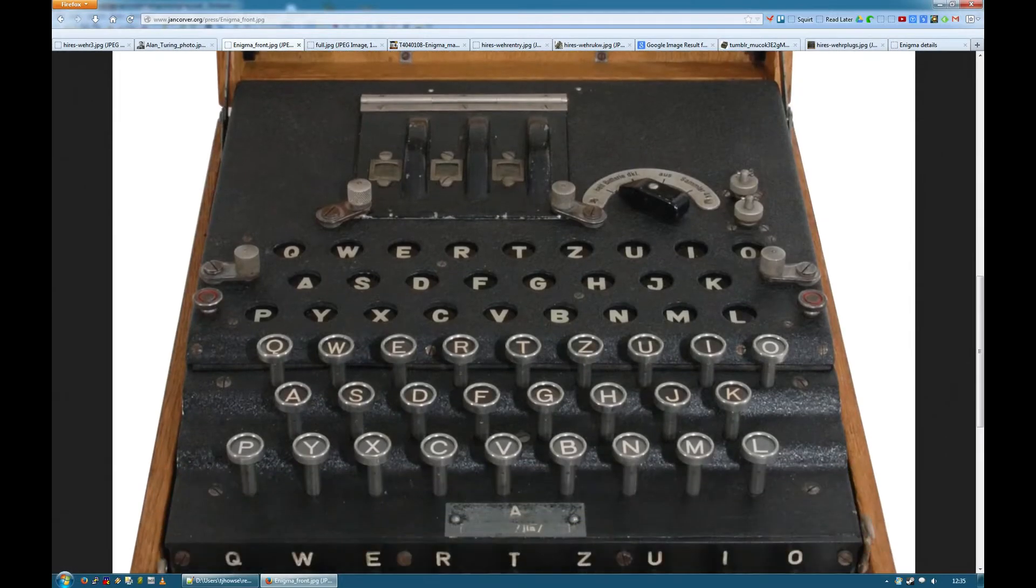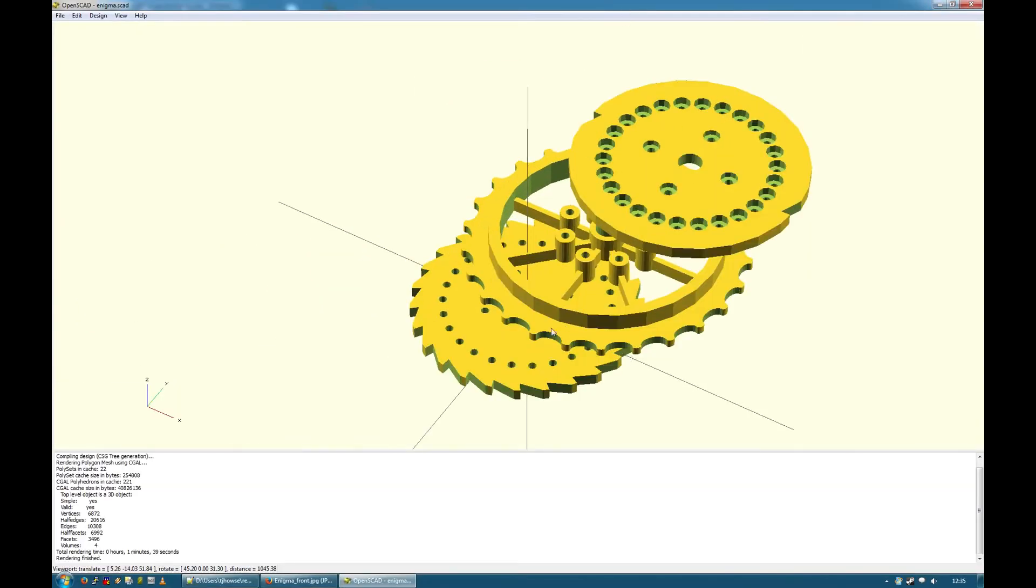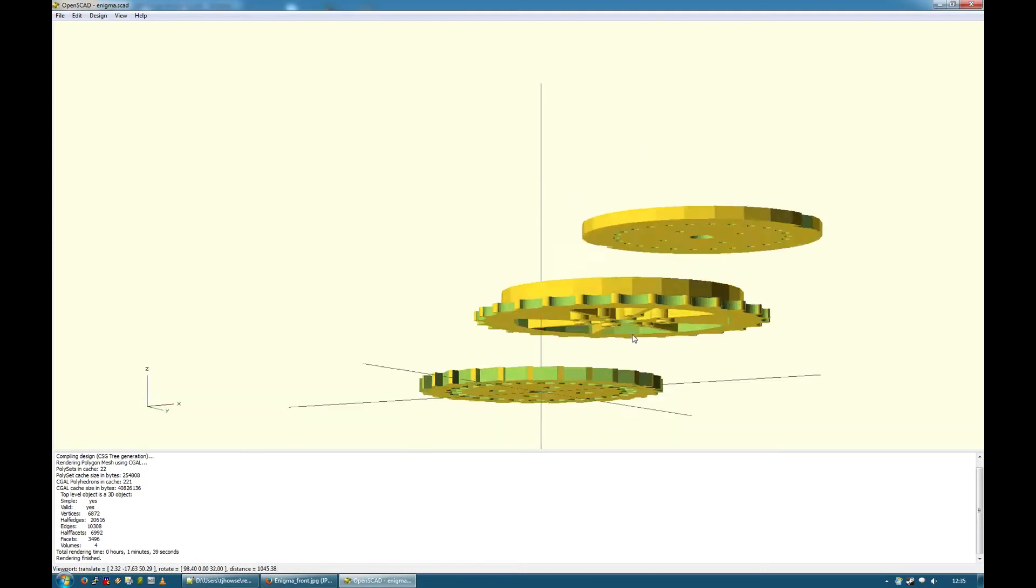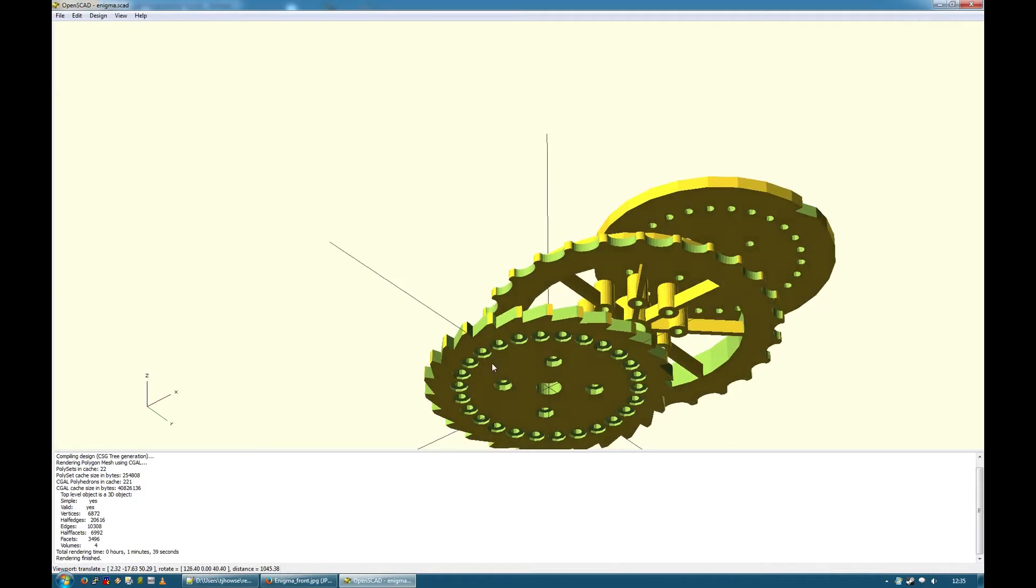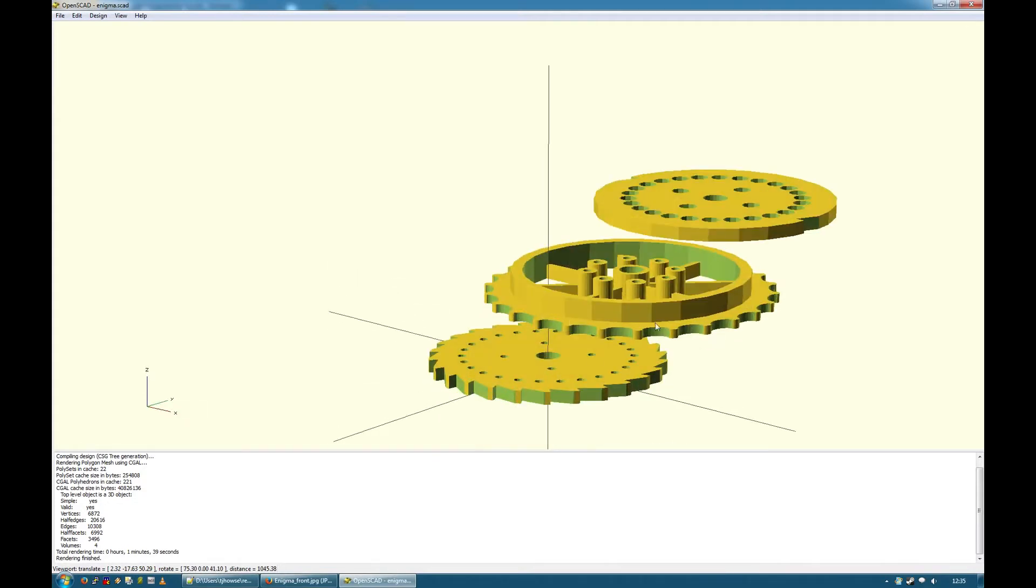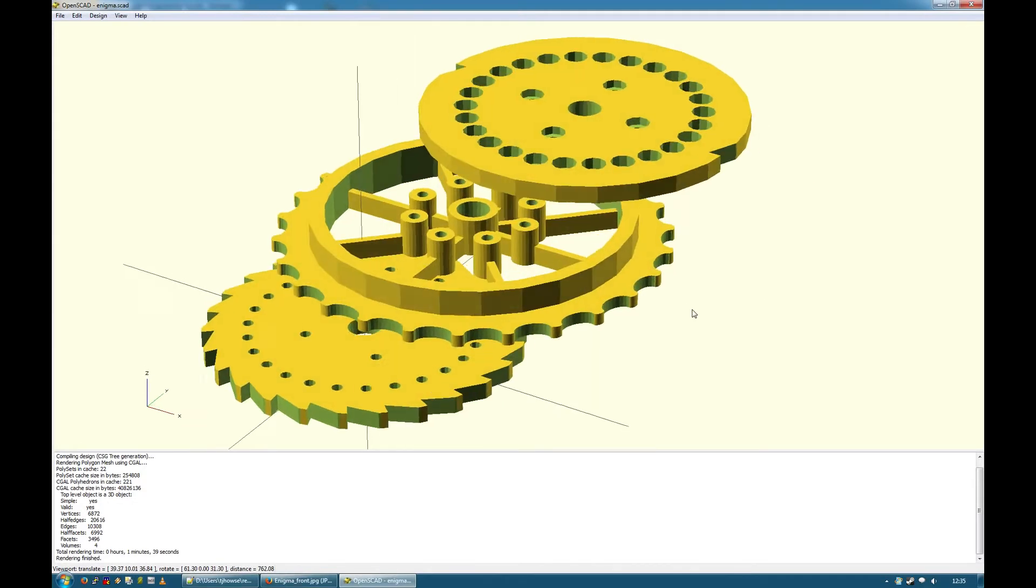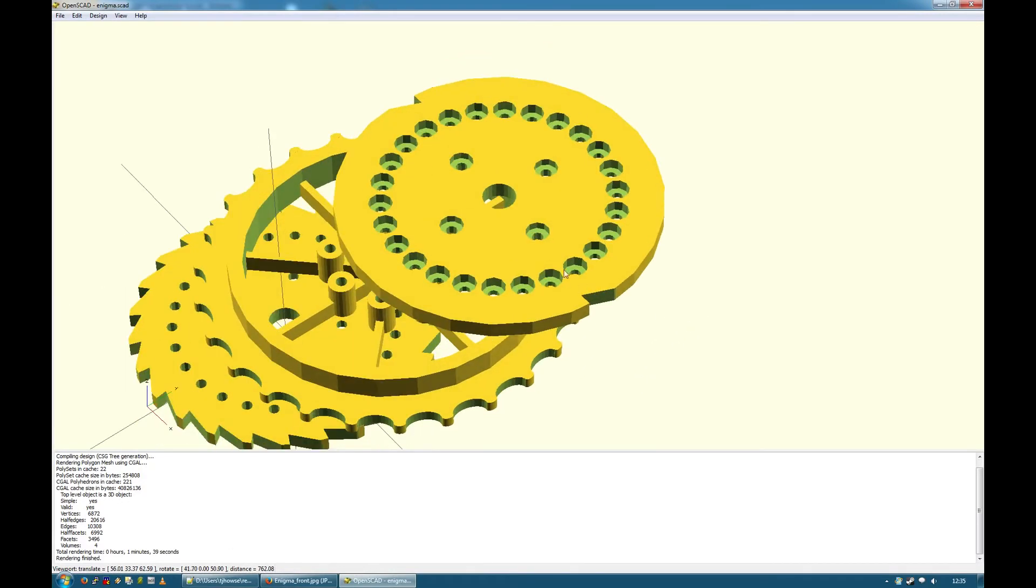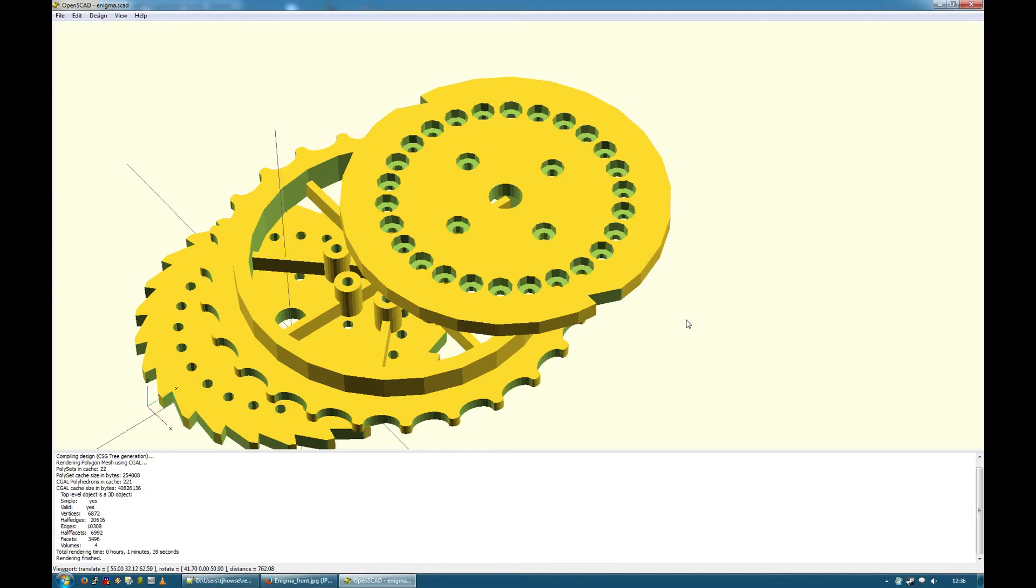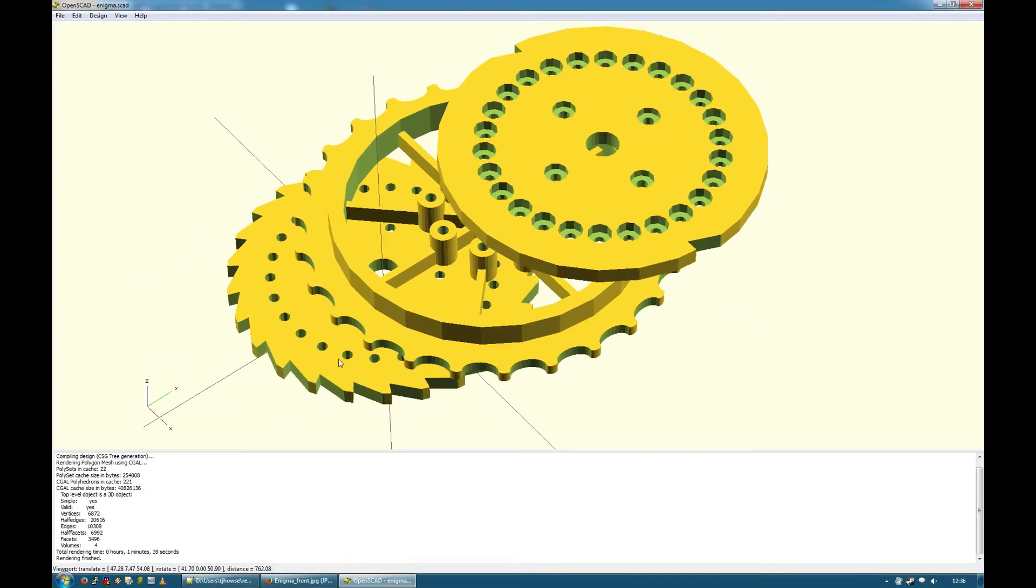So far, I've modeled one of the rotors. You can see this is the right-hand side, where the pins are. This is where the finger knurling is, so you can advance it when you need to set the code. And this is the left-hand side, so you can see this is the Wehrmacht version, because it's got two notches that makes it click round twice for every full revolution of the one to the right.